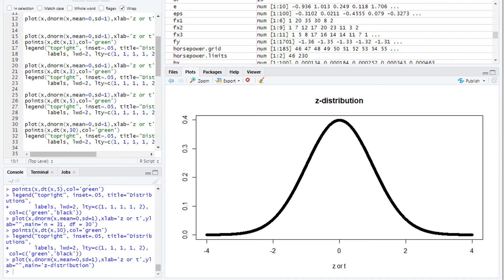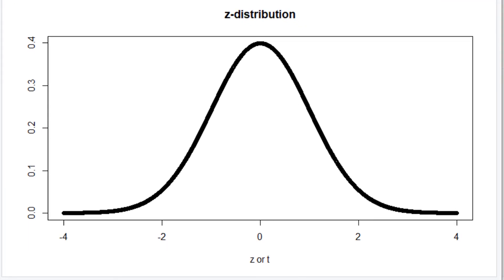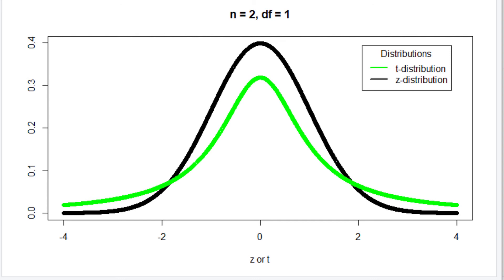We can compare the z and t-distributions using statistical software. I'm using the programming language R. Here we see a standard normal distribution, or z-distribution, centered at zero. The t-distribution is similar to the z-distribution, but its shape depends on the degrees of freedom, which are the sample size minus 1. If the sample size is 2 — an awfully small sample — then the degrees of freedom are 1, and the t-distribution looks like this, similar but not quite the same as the standard normal distribution.